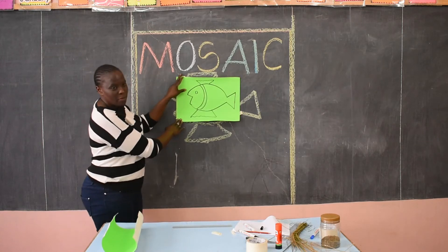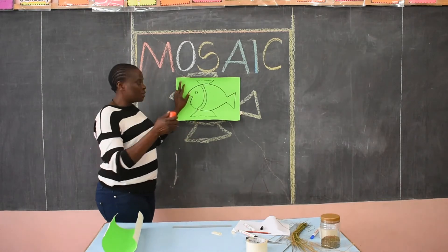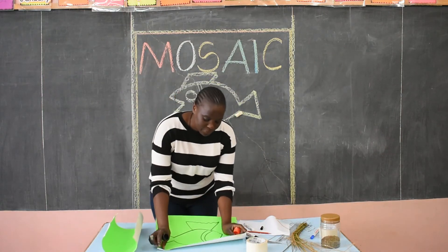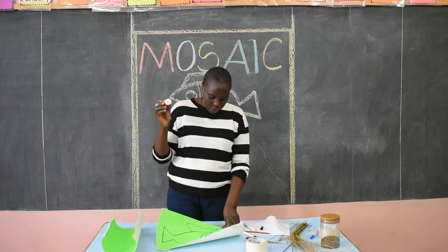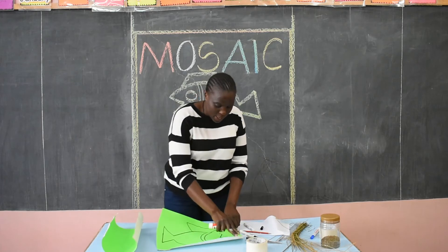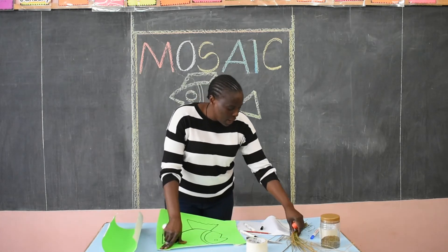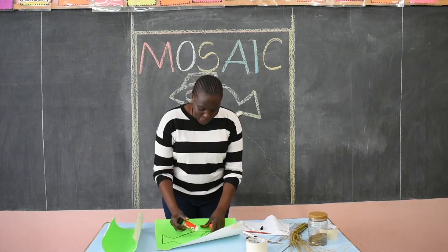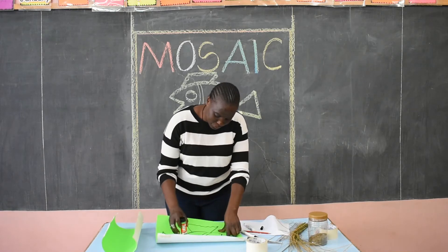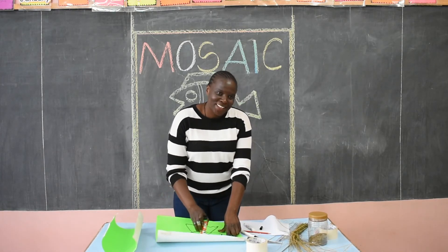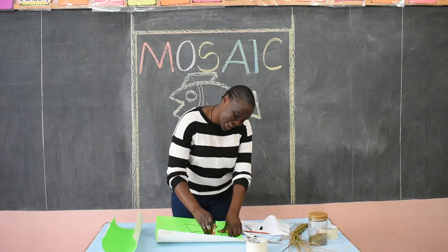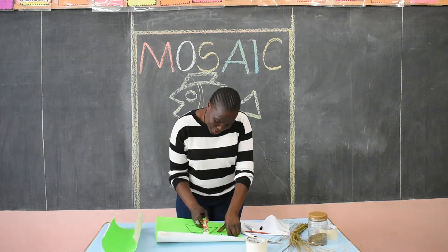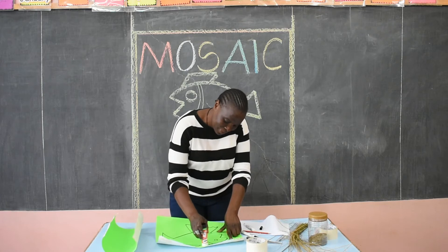After drawing your beautiful fish, I am going to use my glue. I will spread my glue on the fish so that I can apply my grass to make a beautiful mosaic. We are going to spread the glue, and you can spread as you sing this song: I am spreading, I am spreading. Look at me, look at me. Can you do as I do, can you do as I do? Spread, spread, spread, spread, spread.